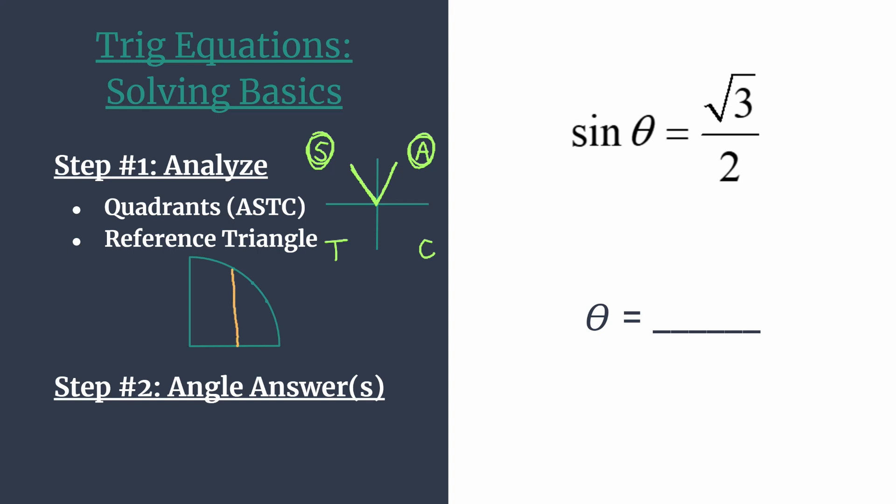So we're going to be working with this special right triangle, which is the one that has the 60 degree angle as the central angle. So I call it the 60-30-90 special right triangle. And again, it has that longer vertical leg. And then the shorter leg would be one half.